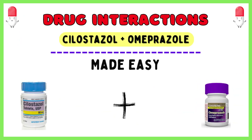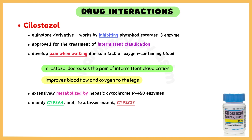In this video, we will discuss an important drug interaction that should be monitored in patients using cilostazole and omeprazole together. Cilostazole is a quinolone derivative that works by inhibiting phosphodiesterase-3 enzyme and is FDA-approved for the treatment of intermittent claudication associated with early-stage peripheral vascular disease.